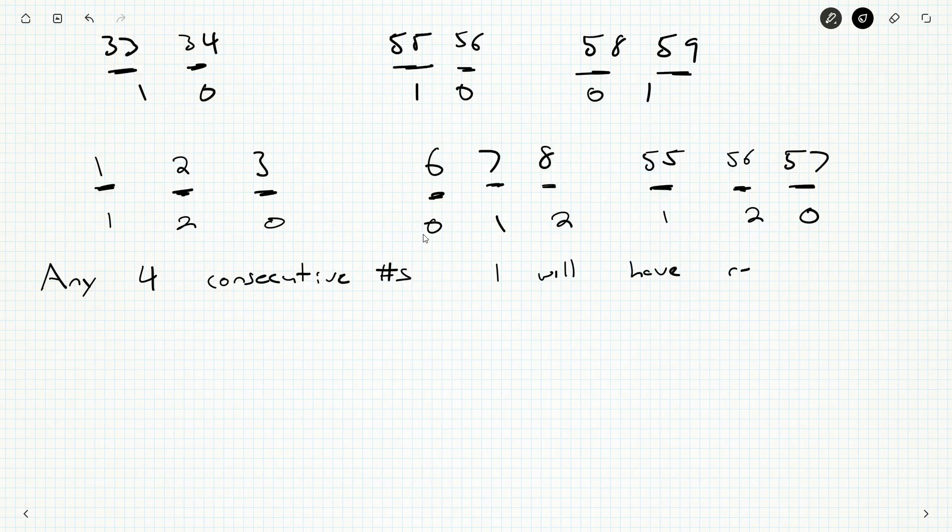One will have a remainder of zero, one will have a remainder of one, one will have a remainder of two, and the last one will have a remainder of three. This is always going to happen with any four consecutive numbers.